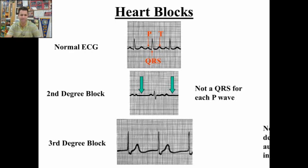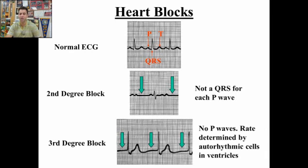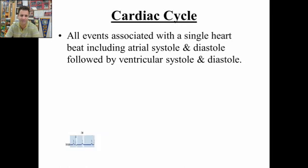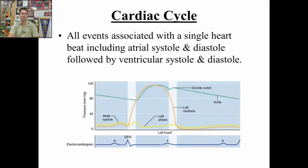Here's another problem: a third degree heart block, where there are no P-waves. Remember, the P-wave is atrial depolarization, so there is no atrial depolarization. You still have ventricular depolarization, but it's not spreading through the atria for whatever reason. All of these combine together to form the cardiac cycle — all in one single beat — combined with systole and diastole of the ventricles.